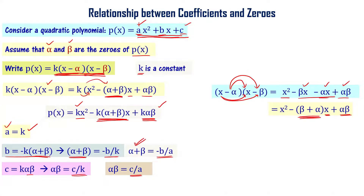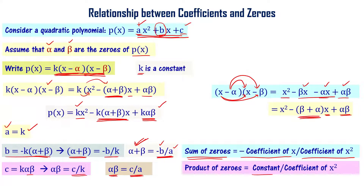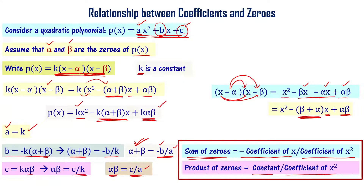So the sum of zeros alpha plus beta of a given quadratic polynomial equals minus b by a, that is, negative coefficient of x divided by coefficient of x square. The product of zeros alpha times beta equals c by a, that is, constant term divided by coefficient of x square. Note these two formulas.